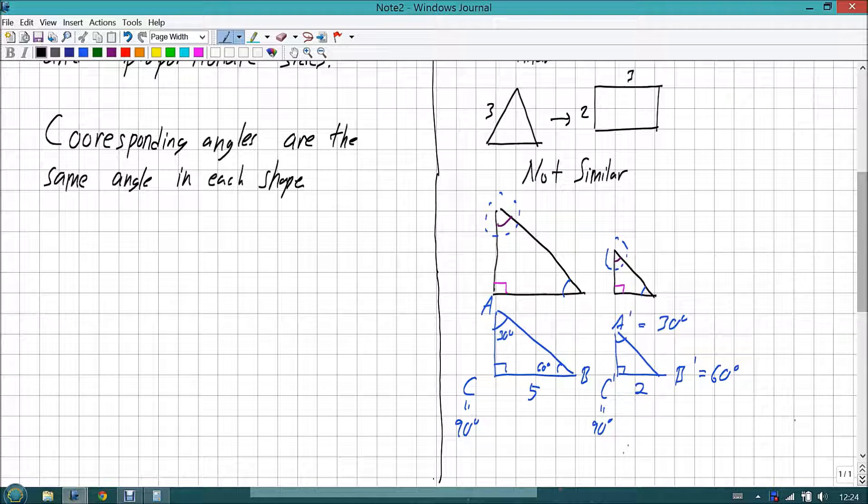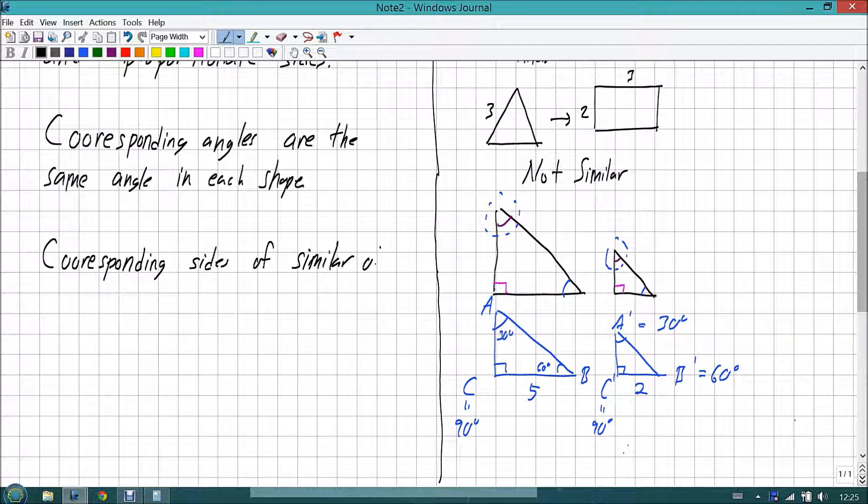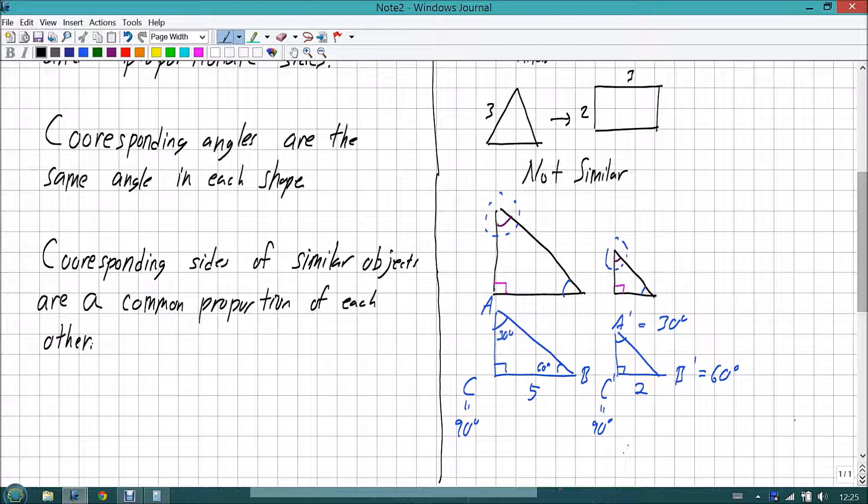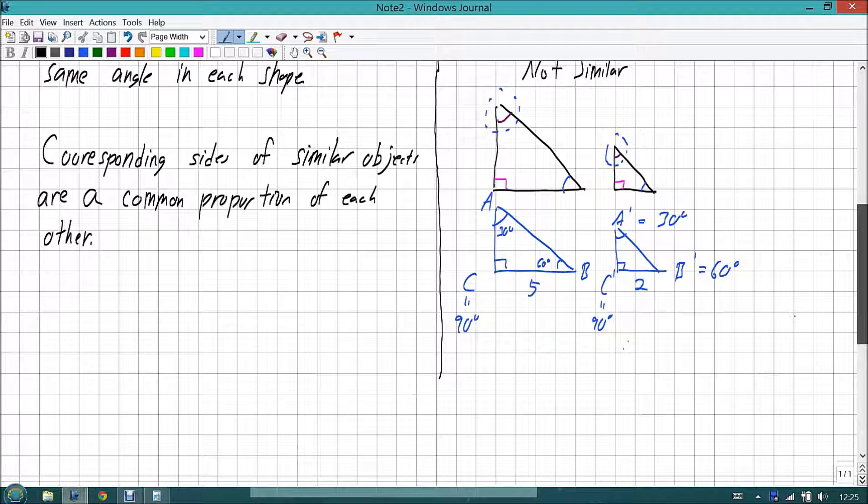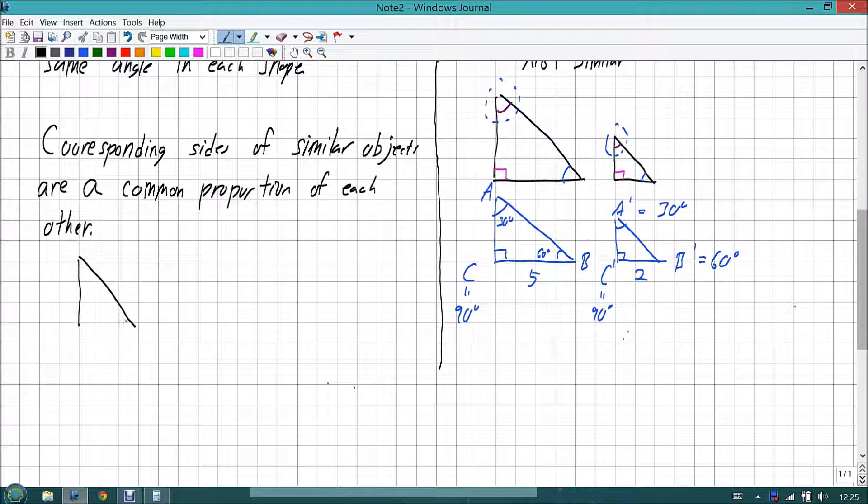And corresponding sides of similar objects are a common proportion of each other. So let's go back to the triangle example again on this one. Let's say for a moment I have a triangle over here that has 3, 4, and 5 for its side lengths.